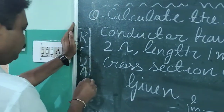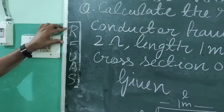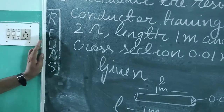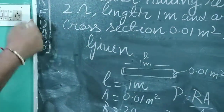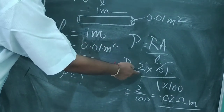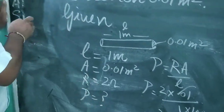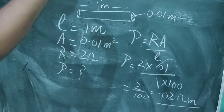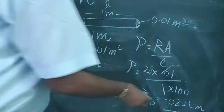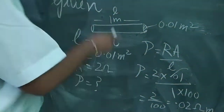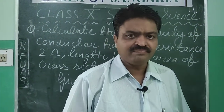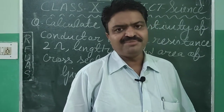According to this trick, to solve a question: first read the question, then find all the given quantities, understand the question and what is being asked, apply the appropriate formula, put in all the physical quantities, solve it, and write the answer with its SI unit. This is how we can easily solve problems related to physics. Thank you very much and have a pleasant day.